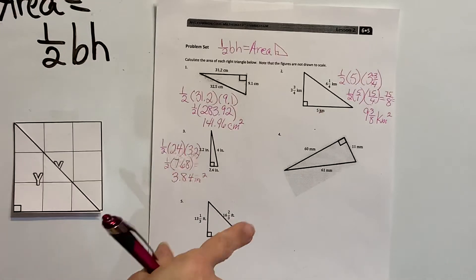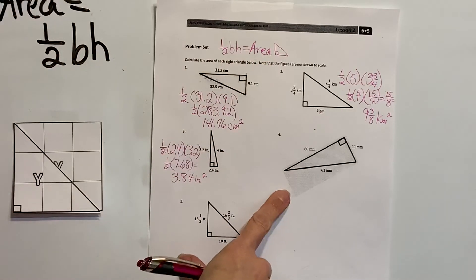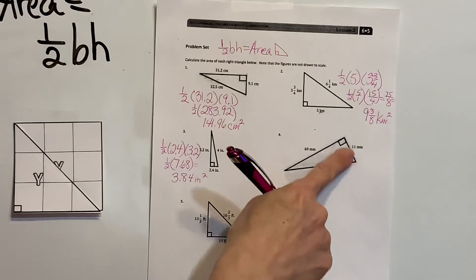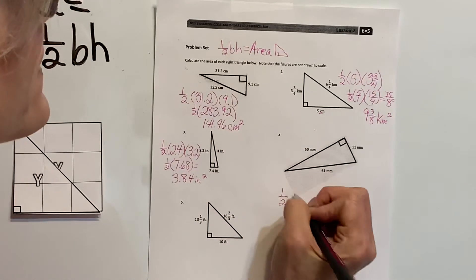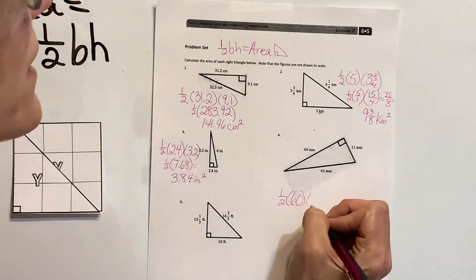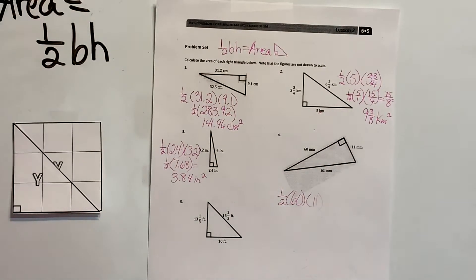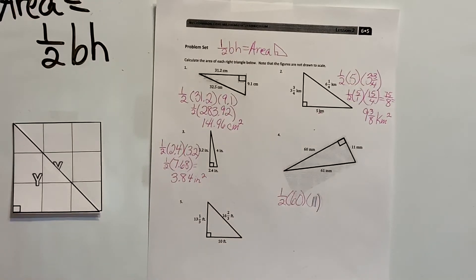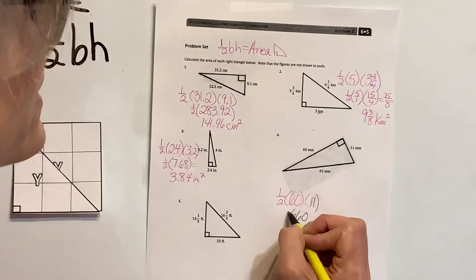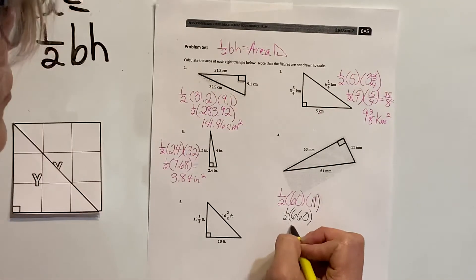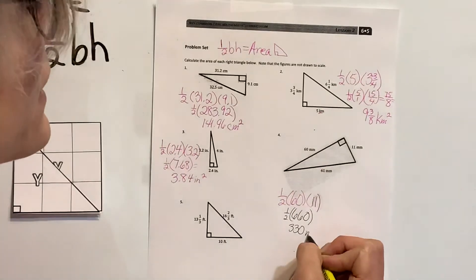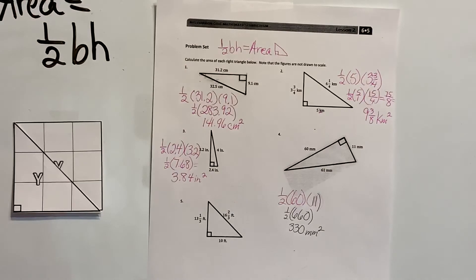For number four, half base times height gives me the area. Here's my perpendicular line — that's my height — and this is my base. So half of 60 times 11: I know 11 times 6 is 66, so 11 times 60 is 660. Half of 660 is 330. The measurement is millimeters squared.